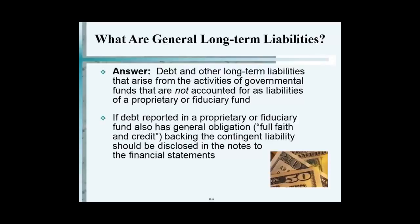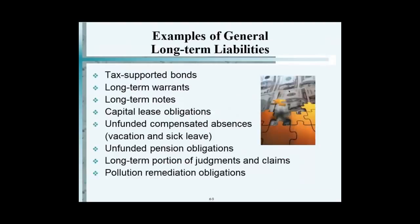These are the types of general long-term liabilities. We thought long-term liabilities were only debt, but look at the other examples: bonds, warrants, notes, capital leases, unfunded compensated absences like vacation and sick leave, unfunded pension obligations — remember the statement of net position for the state of New Jersey, which showed billions and billions of dollars — long-term portion of judgments and claims, such as when a trooper gets sued and the state has to pay, and pollution remediation obligations. Compensated absences and pension obligations are very big in government.